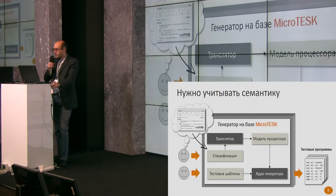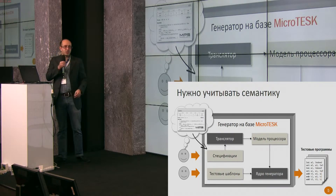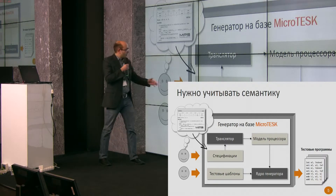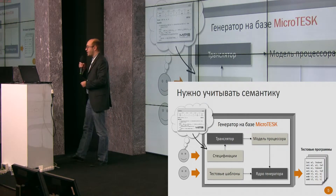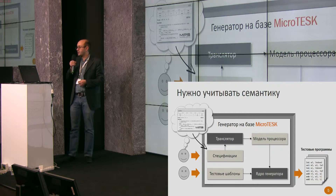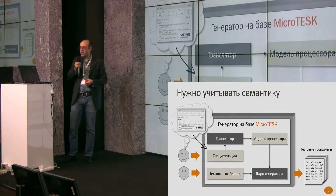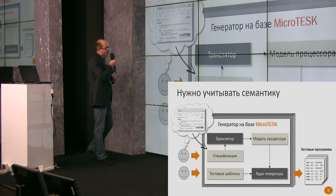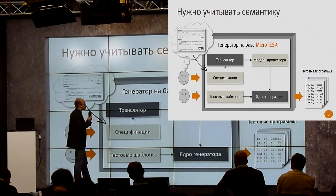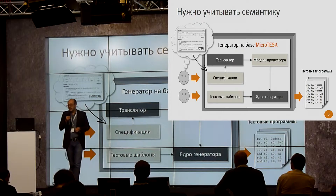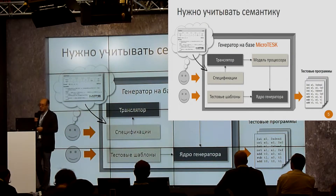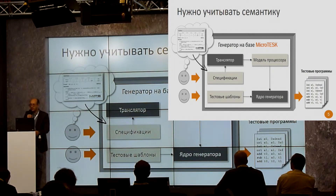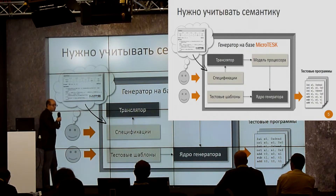There are two types of input information: specifications and test templates. Specifications are stable — developed once for the architecture and not changed; they are fixed for the architecture. Specifications are input to the translator. The translator analyzes specifications and builds models of the microprocessor. This model is then used for the test templates. The test templates are a high-level description of the verification scenarios.